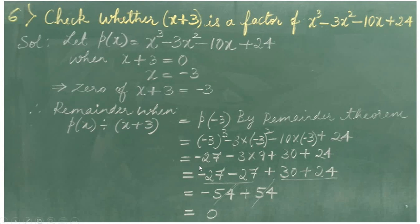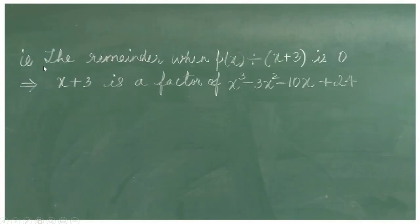Which equals minus 27, minus 3 into 9 is minus 27, plus 30, plus 24. Minus 27 minus 27 gives minus 54. Plus 30 and plus 24 give plus 54. Minus 54 plus 54 gets cancelled and the answer is 0. That is p of minus 3 is 0. This implies the remainder when p of x is divided by x plus 3 is 0, so x plus 3 is a factor of x cube minus 3x square minus 10x plus 24.